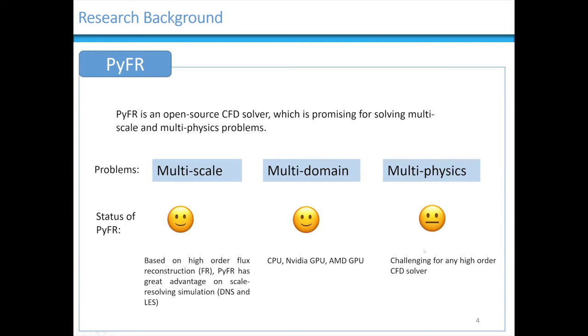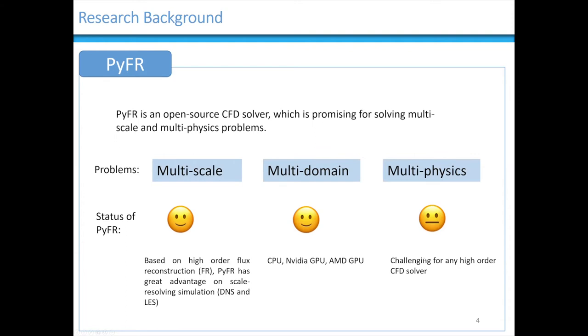However, it's actually challenging for any high-order CFD solver. So why is multi-physics challenging? First, the challenge is from physical models, which means how to describe the main physical process without significantly increasing complexity. Another issue is for numerical schemes. For example, we need a more accurate and robust shock-capturing scheme. So here, firstly, we construct a reactive multi-phase model which can be integrated into PyFR.